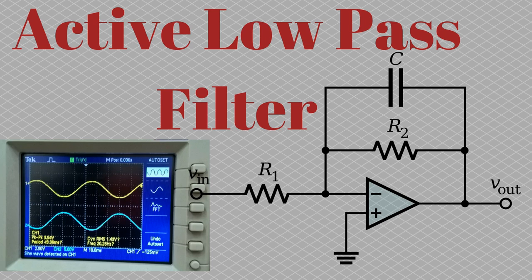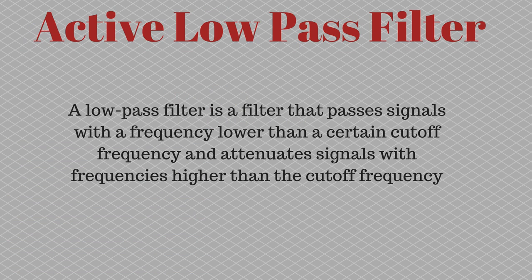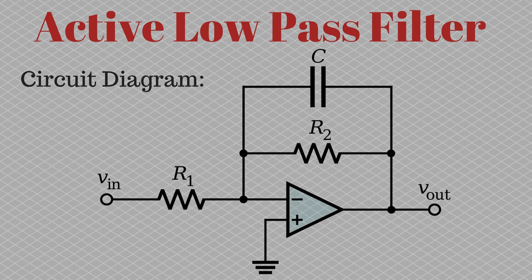In this video I'm going to demonstrate the working of an active low pass filter. By definition, a low pass filter only allows signals with frequencies lower than a certain critical frequency to pass through it. If the filter contains any active component such as an op-amp — that is, an operational amplifier — then it is known as an active low pass filter.